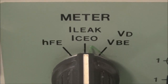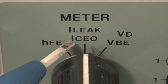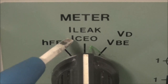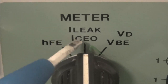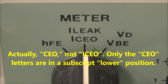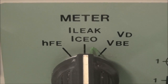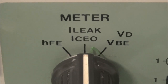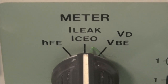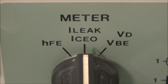Other vintage transistor testers have this ICEO function too. If we look at the letters: the I stands for current. The C and E mean the test is done between the collector and the emitter, and the O stands for the base being open. So since the base is open, we're not applying current to the base, meaning the transistor won't have any gain and won't be amplifying anything. The test is done with reverse bias.